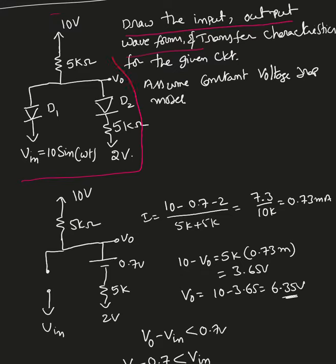As mentioned, we always start by assuming one diode is closed and another is open. Here I'm assuming D1 is open and D2 is closed. Closed means there is a 0.7V drop because of the constant voltage drop model. Since D1 is open, the circuit looks like a DC circuit, so I apply KVL: 10 minus 0.7 minus 2 volts, divided by 5k plus 5k (which is 10k).